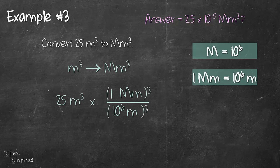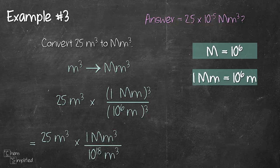So let's simplify. Now we have 25 times 1 divided by 10 to the power of 18 because we cube the exponent - 10 to the 6 cube so 6 multiplied by 3 gives us 18 - and then the meter cube can now cancel off each other and we do the math. We get 2.5 times 10 to the power of negative 17 mega meter cube.